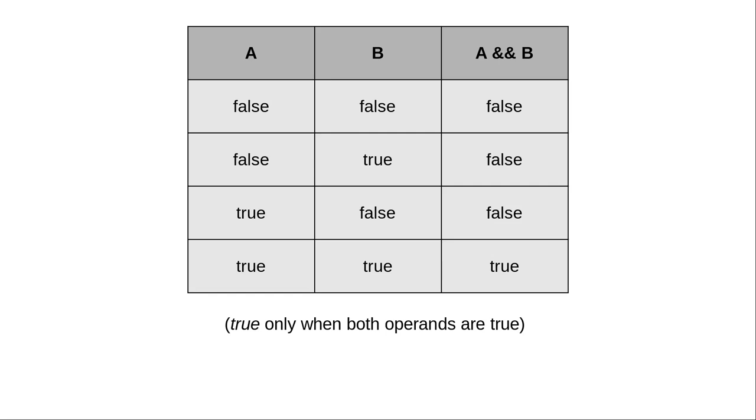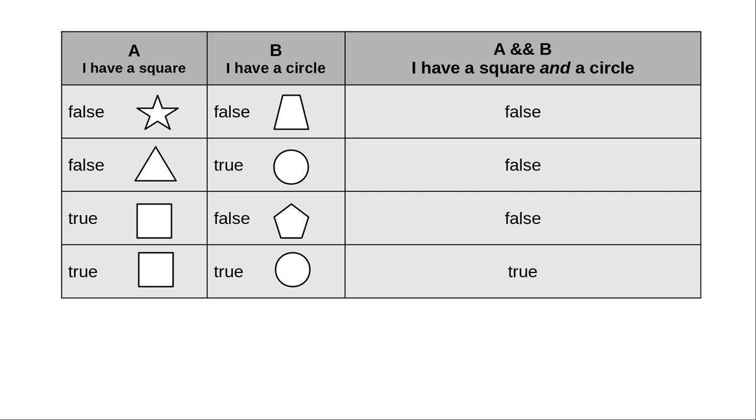Here's the truth table that shows how AND works. That's a bit abstract, so here's a concrete example. The only combination that works, having both a square and a circle, is when both conditions, having a square and having a circle, are true.